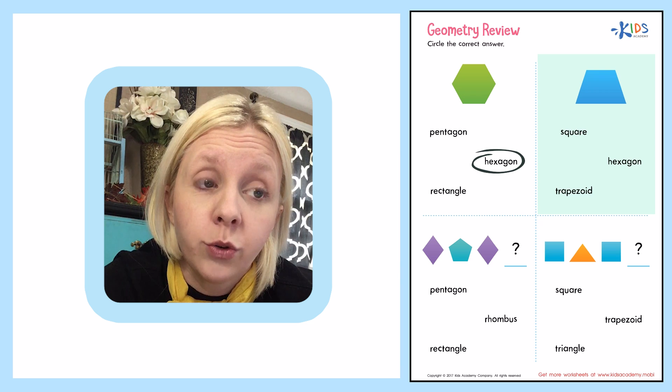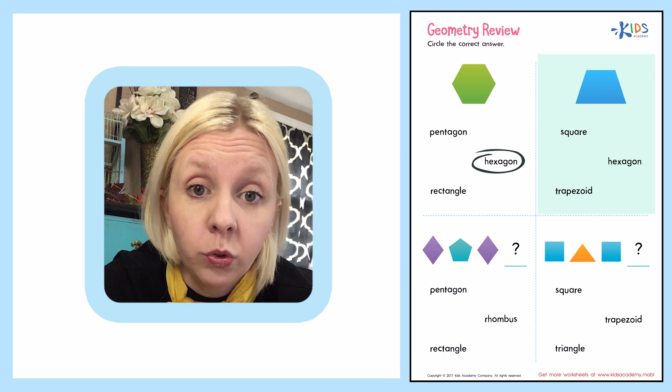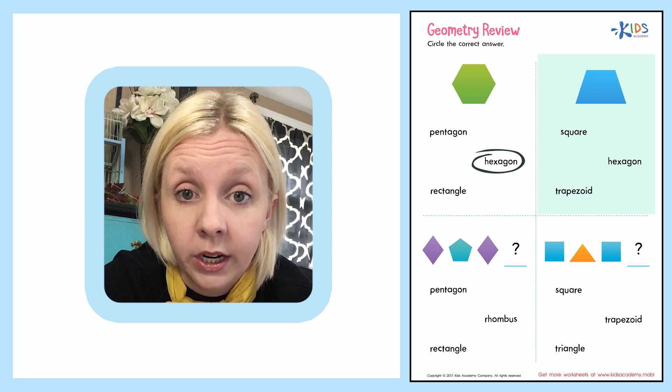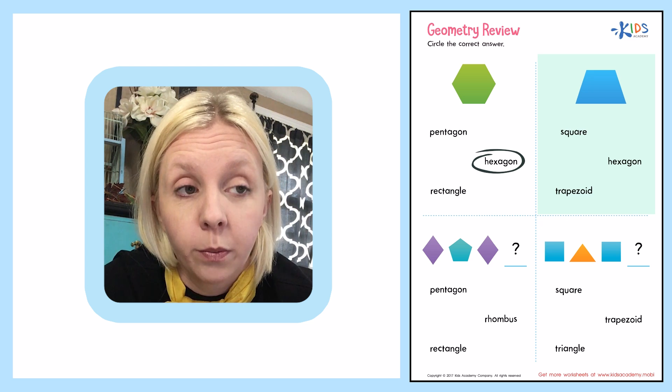A trapezoid is a quadrilateral that has two sides that are parallel. So it's kind of like, it could be a square, a rectangle, but it's only got two sides that are parallel.